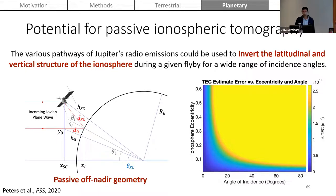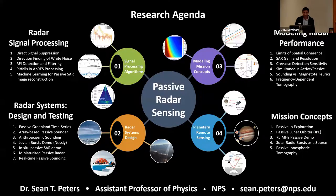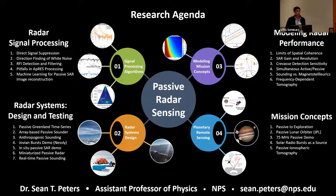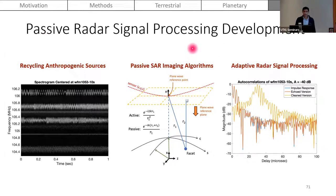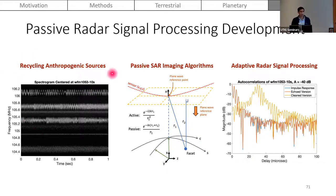My lab is interested in pursuing more radar signal processing techniques, looking at more passive radar system designs and testing, modeling passive radar performance, and potential applications for different mission concepts. Regarding signal processing development, I'm interested in recycling not just the sun and Jupiter source, but other anthropogenic sources — FM radio stations, TV stations, GPS — all potentially usable for studying the Earth system. I'm also interested in improving signal processing techniques such as passive SAR imaging, applying deep learning algorithms for the incoherent source case, and adaptive radar signal processing such as direct signal suppression.